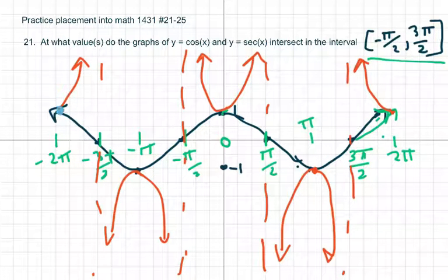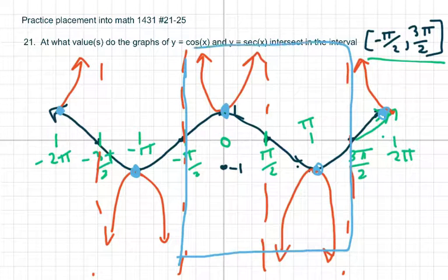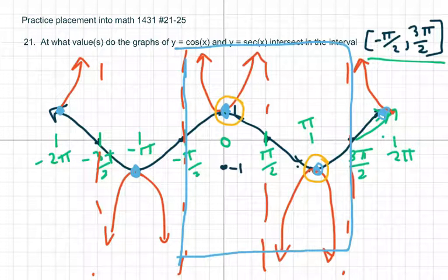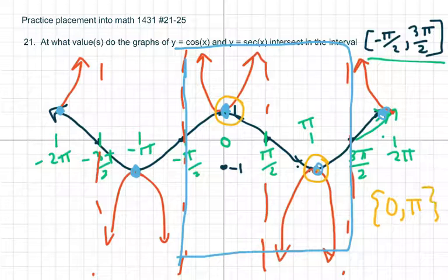So what they're asking is where do they intersect. And this is where they intersect right here, where I'm putting the blue dot. They want between negative pi over 2 to 3 pi over 2. So where do they intersect? Well, there's only two parts. They intersect here and here. So they intersect, the solution sets would be at 0 and at pi. That's the only place they intersect between negative pi over 2 and 3 pi over 2. So just make sure you know your graphs.